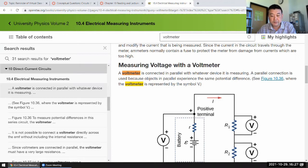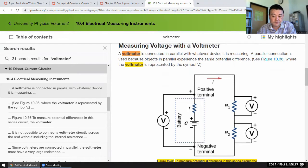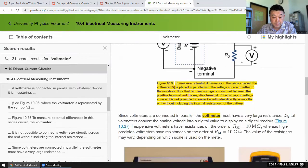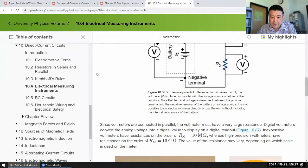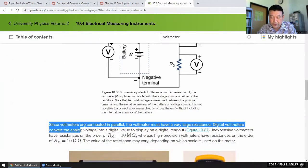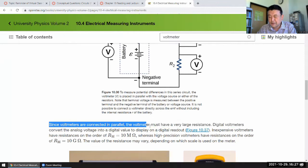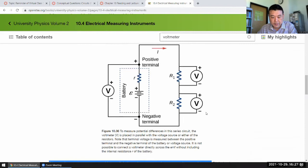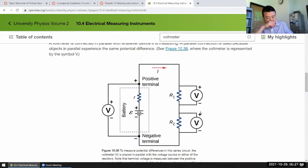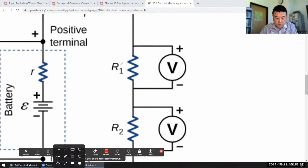Parallel connection is used because of the same potential. It's measuring the potential difference it experiences here. Since voltmeters are connected in parallel, the voltmeter must have very large resistance. That's an interesting claim. Let me bring your attention to this portion of the circuit here.